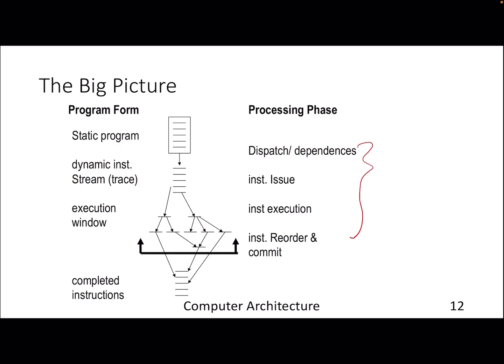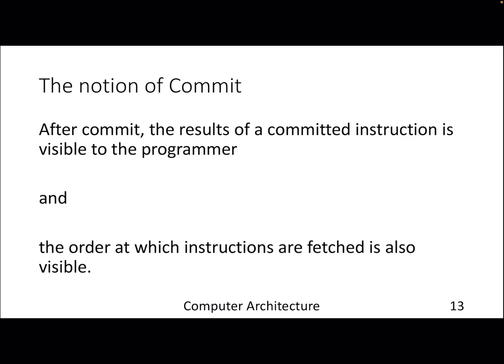The big picture: we write a program which is a static program; eventually we generate a trace of instructions, and the compiler can do its own scheduling — it may not follow the order the programmer wrote, just to improve performance. Once those instructions enter the processor, they go through in-order fetch and decode, but eventually things get executed out of order. Finally, we make sure that instructions are visible in the order in which they enter the pipeline.